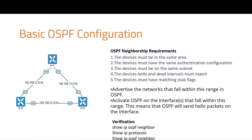The hello timer is 10 seconds and the dead interval is 40 seconds. In Cisco, this is the default value — 10 and 40 seconds. That means there are 4 times the hello interval. Once R1 sends a hello message to R2, we wait for 3 consecutive hellos.